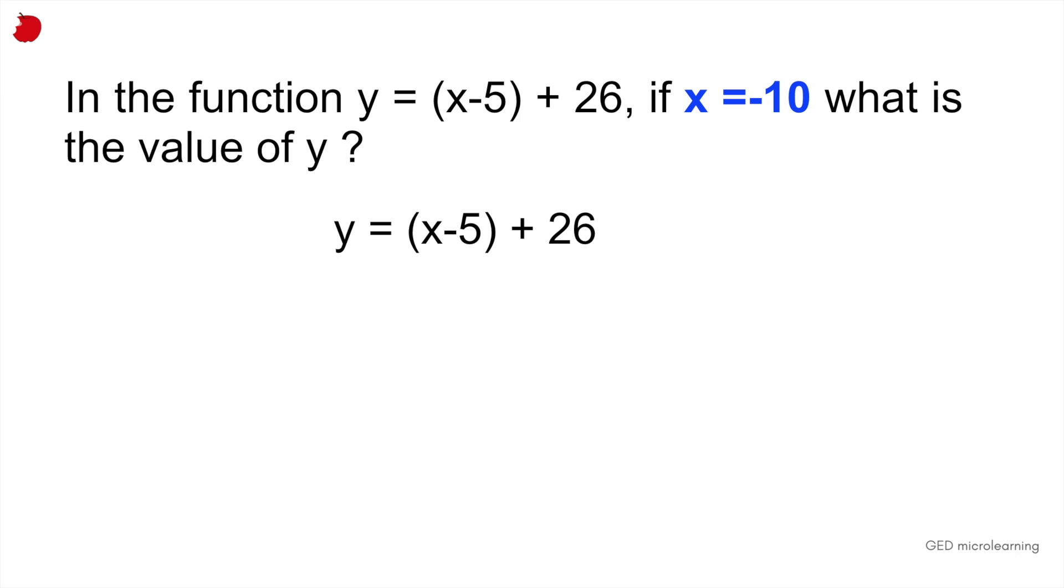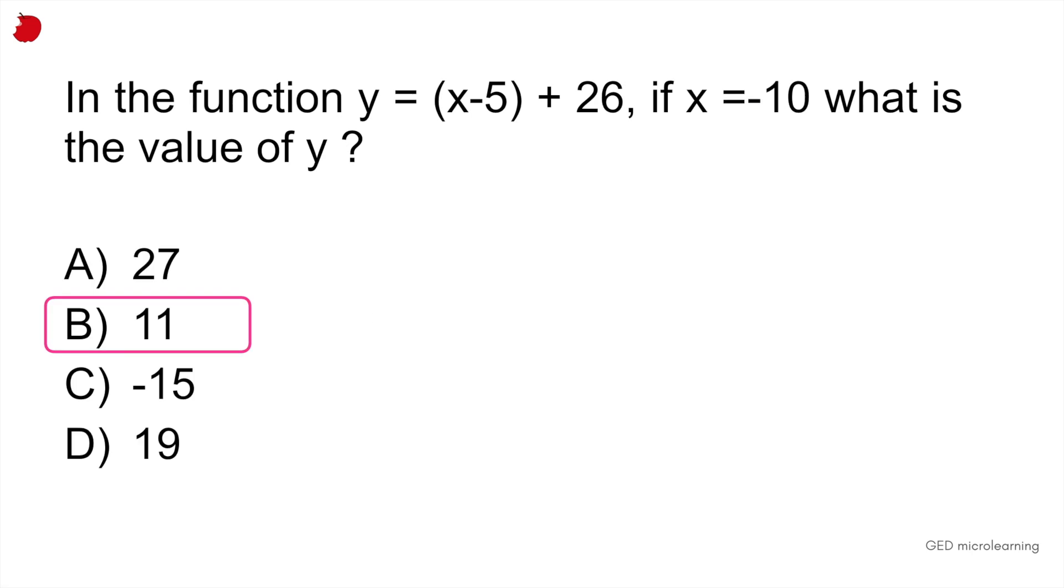And all you have to remember is to keep your signs straight. So just remember to put if it's a negative sign or a positive sign correctly, because that could really mess up your question. So if you introduce that value of X, which is minus 10 into your equation, you would have minus 10 minus 5 in the brackets plus 26. That would give you minus 15 plus 26, which gives you positive 11. And that's all there is to this question. That would be answer B.